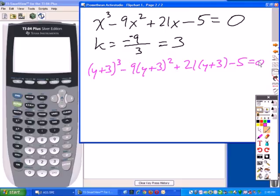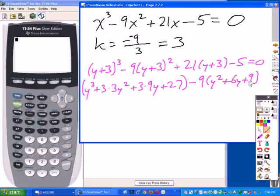Taking that equation and expanding the first term, we get y³ + 3(3)y² + 3(9)y + 27. That's the (y + 3)³ quantity cubed. And then we get -9 times (y² + 6y + 9). And then we get a plus 21y + 63 - 5 = 0.